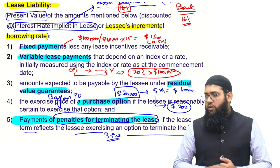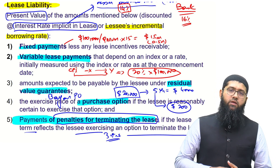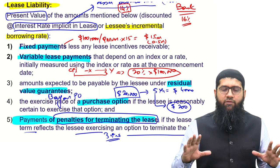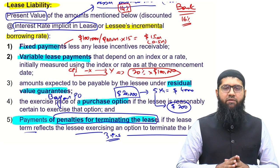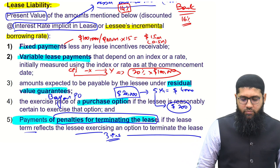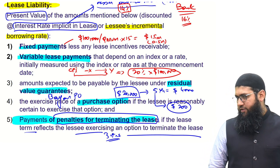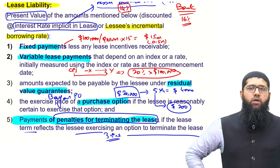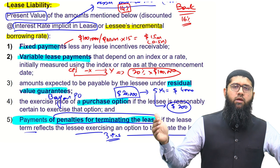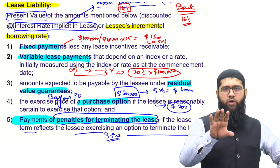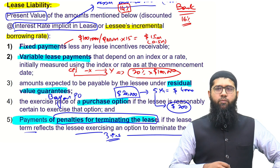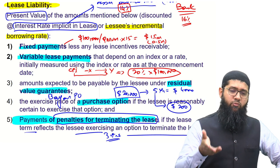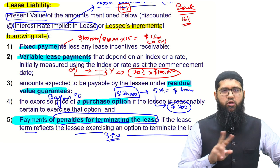So the lease liability includes five things: fixed payments, variable payments, the guaranteed portion of residual value, any bargain purchase option, and termination penalties if it is highly likely they will be incurred. All of these are discounted using the interest rate implicit in the lease. If that rate is unavailable, the lessee's incremental borrowing rate is used. Note that guaranteed residual value and bargain purchase option generally cannot coexist — one implies returning the asset, the other implies purchasing it.